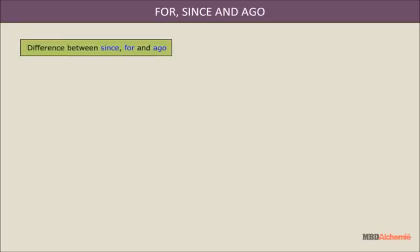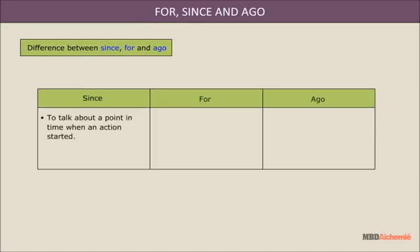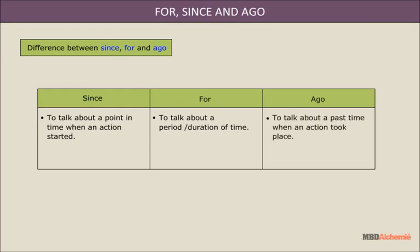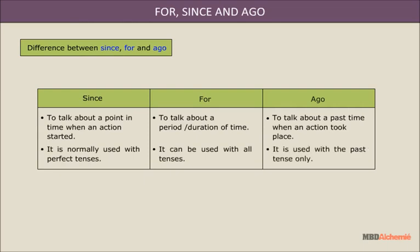Difference between since, for, and ago: Since is used to talk about a point in time when an action started. For is used to talk about a period or duration of time. Ago is used to talk about a past time when an action took place. Since is normally used with perfect tenses. For can be used with all tenses. Ago is used with the past tense only.